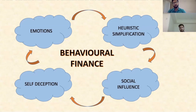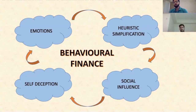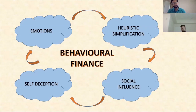Next is social influence, which is typically when people try to follow someone else's guidance without doing any research on their own. They tend to take decisions influenced by someone else's guidance or research, stop doing their own research, and end up making mistakes. The last factor is self-deception, which simply translates to overconfidence.